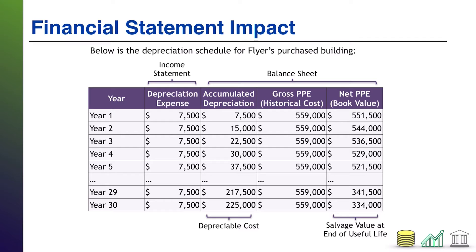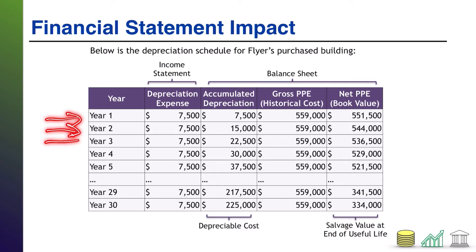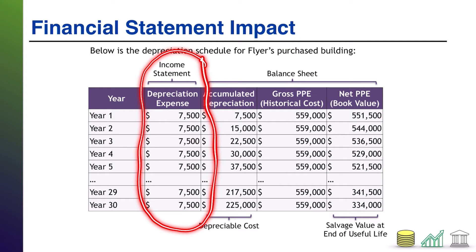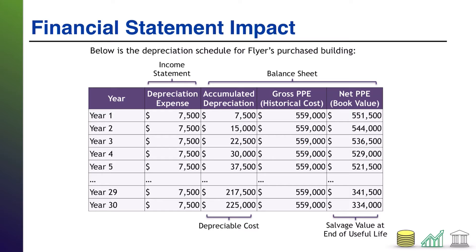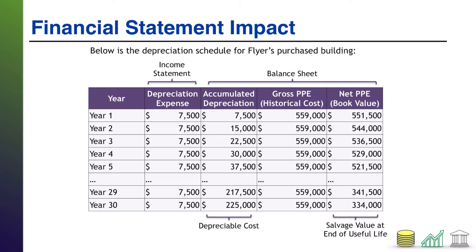I want to talk about the financial statement impact of doing this. I've set up what's called a depreciation schedule, where you list every year of life for the asset and show the effects of depreciation on that asset. The depreciation expense column is what's going to hit our income statement. We just calculated the depreciation expense was $7,500 per year, so every single year — year one, year two, year three, all the way to year 30 — we hit our income statement with depreciation expense of $7,500. And that's going to eat into our net income.